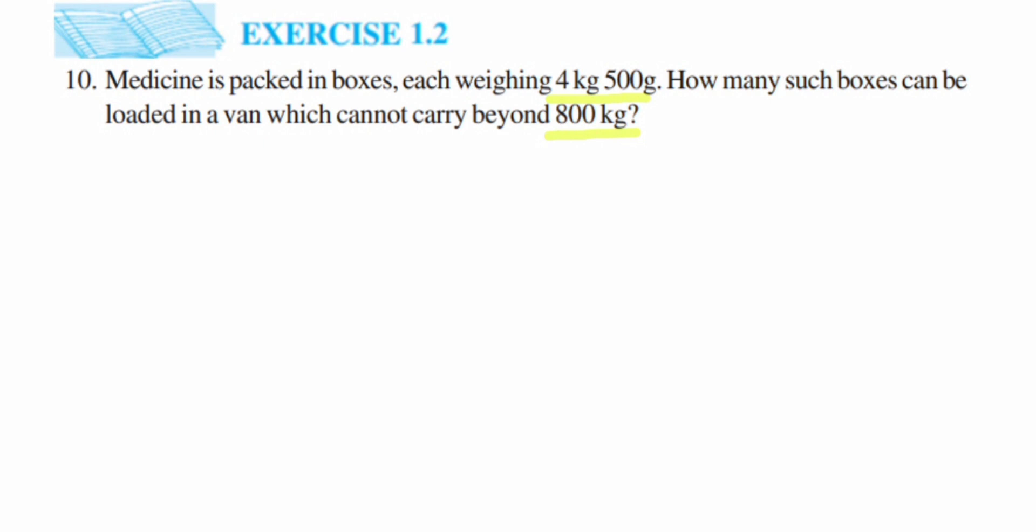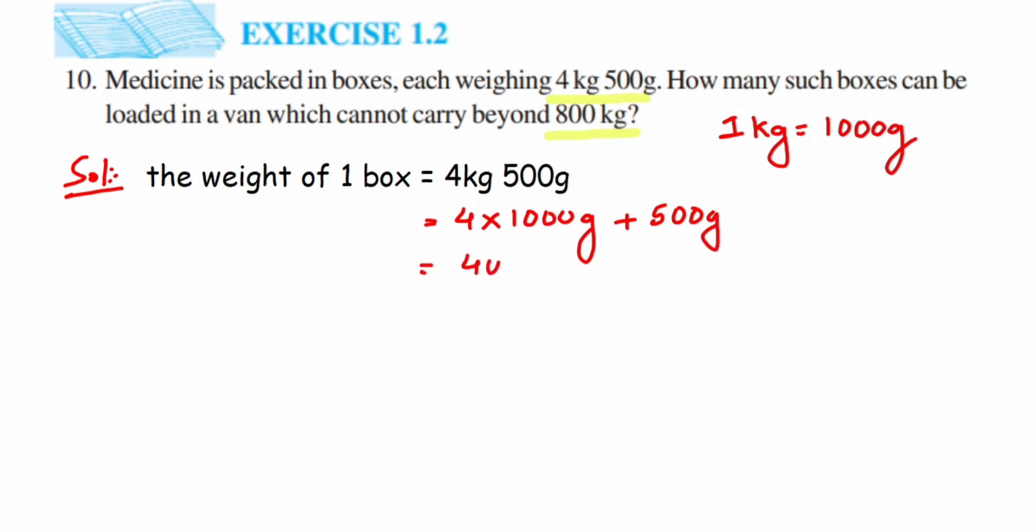Here is the solution. First, we're going to convert. The weight of one box is equal to 4 kg and 500 grams. We're going to convert this completely into grams. We know that 1 kg is equal to 1000 grams, so 4 kg is 4 times 1000 grams plus 500 grams. So this will be 4000 grams plus 500 grams, which equals 4500 grams.